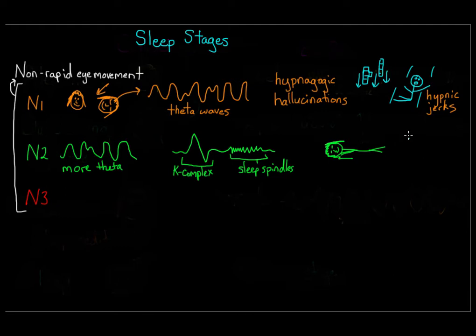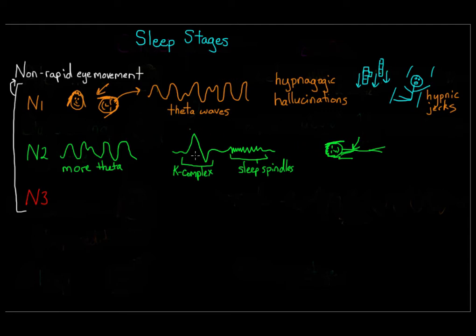K-complexes are a different type of brain activity also thought to suppress cortical arousal and keep you asleep. They're also thought to help with sleep-based memory consolidation, which is the theory that some memories are transferred into your long-term memory during sleep. What's interesting is that even though K-complexes occur naturally, you can also trigger them by gently touching someone in this stage of sleep — just brushing their skin will induce K-complex activity, as the brain assesses the touch as non-threatening and suppresses processing of that stimuli to keep you asleep.